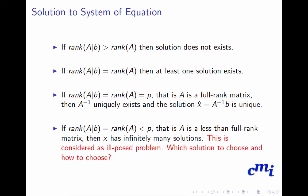Let's look into the possible solutions of the system. If rank of A augmented B is greater than rank of A, then the solution does not exist. If rank of A augmented B equals rank of A, then at least one solution exists. If rank of A augmented B equals rank of A equals p, that is A is a full rank matrix, then A inverse uniquely exists and the solution x hat is A inverse B, also a unique solution.